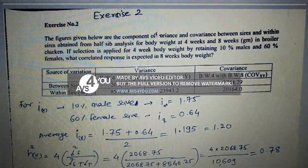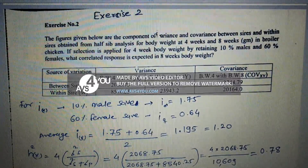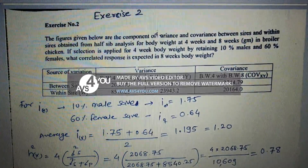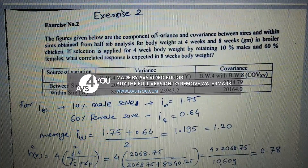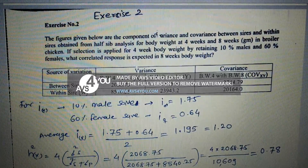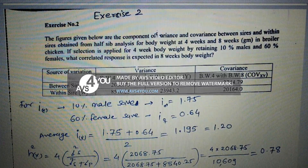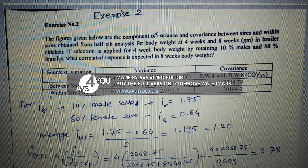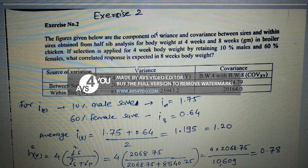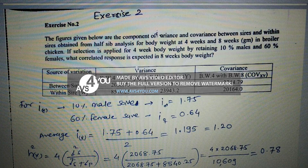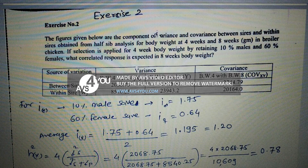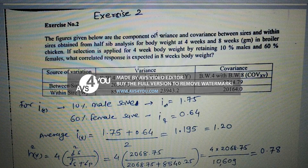Second exercise: the figures given below are the components of variance and covariance between-sire and within-sire, obtained from the half-sib analysis for body weight at four weeks and eight weeks in broiler chicken. If selection is applied for four-week body weight by retaining 10% males and 60% females, what correlated response is expected in eight-week body weight? So four-week body weight is our X trait and eight-week is the Y trait.